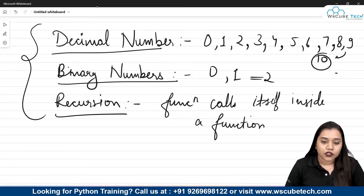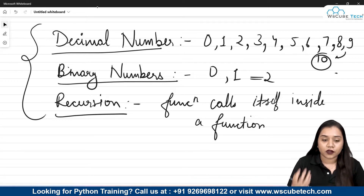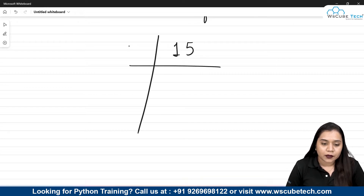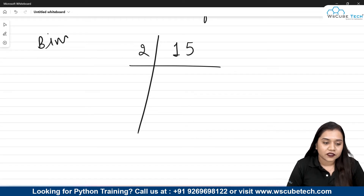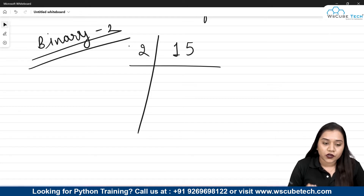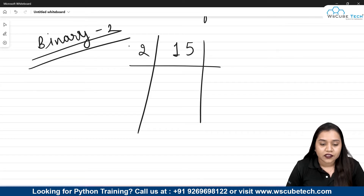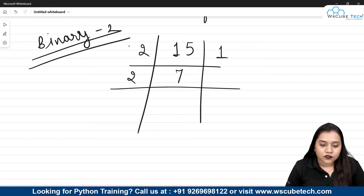Let's talk about how to convert a decimal number into a binary number on paper. Suppose we have the number 15. To convert it into a binary number we need to divide it by 2, since binary means base 2. So 15 divided by 2 gives a quotient of 7, because 2 times 7 is 14, and we get a remainder of 1.